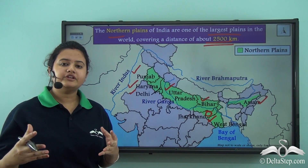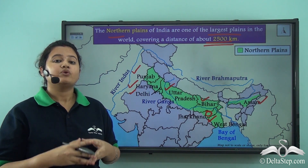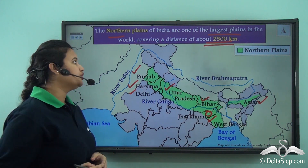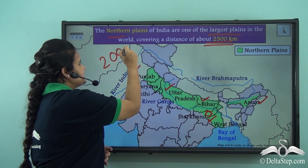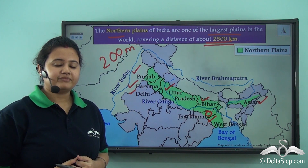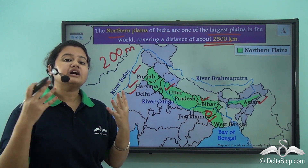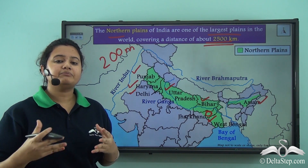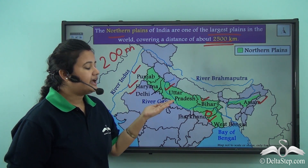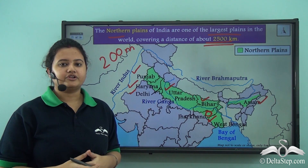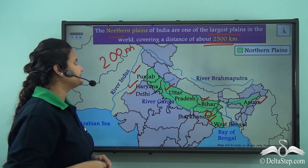The Northern Plains are lowlands with an elevation of not more than 200 metres above sea level, and they are formed by the alluvial deposits of three major rivers: Indus, Ganga, and Brahmaputra. Now let us explore more about these Northern Plains.